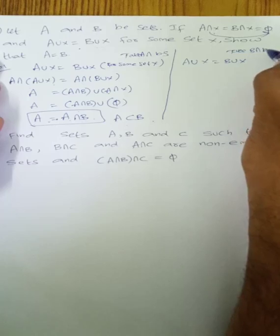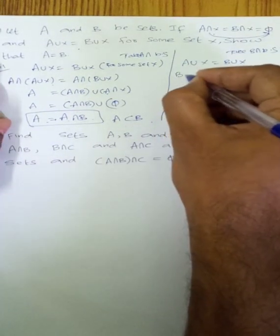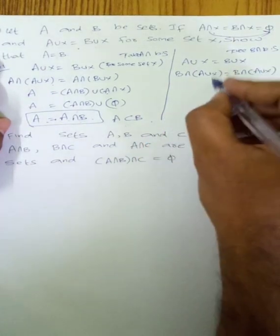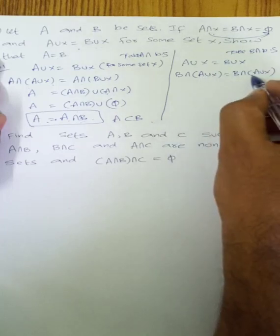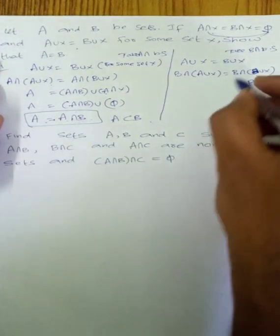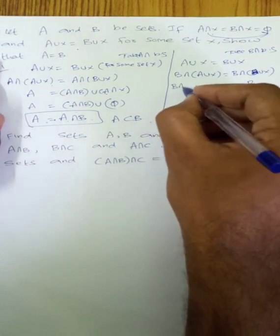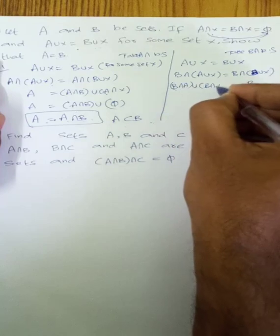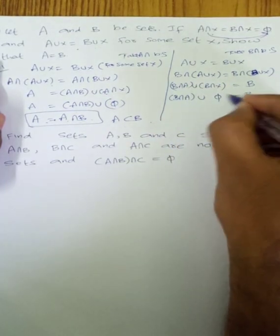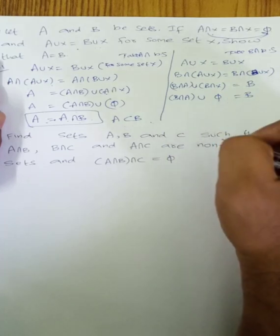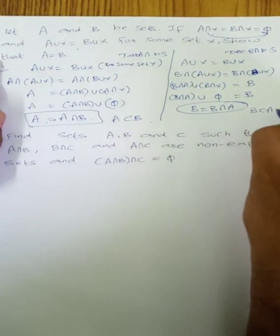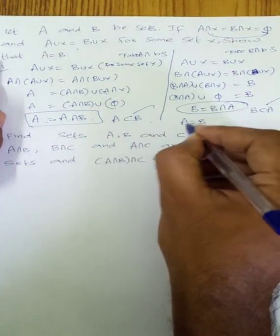Second, from A union X equals B union X, intersect both sides with B. So B intersection (A union X) equals B intersection (B union X) equals B. Distributing: (B intersection A) union (B intersection X). Since B intersection X equals empty set, this gives B intersection A. Therefore B equals B intersection A, so B is a subset of A. Since A is a subset of B and B is a subset of A, therefore A equals B.